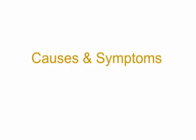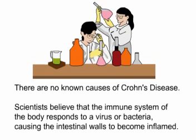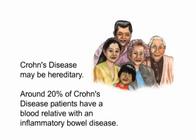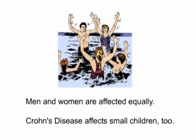There are no known causes of Crohn's disease. Scientists believe that the immune system of the body responds to a virus or bacteria, causing the intestinal walls to become inflamed. The immune system is made of blood cells and chemicals that find bacteria and viruses and destroy them. When the immune system tries to fight bacteria in the intestines, the intestines can become inflamed, swollen, destroyed, or scarred. Crohn's disease may be hereditary — around 20% of Crohn's disease patients have a blood relative with an inflammatory bowel disease. Men and women are affected equally, and Crohn's disease affects small children too.